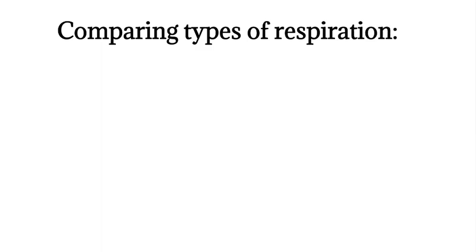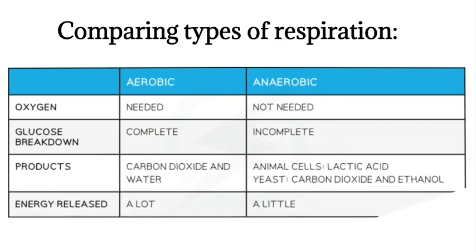Let's compare the two types of respiration. For aerobic respiration, oxygen is needed; for anaerobic, it is not needed. Glucose breakdown is complete in aerobic and incomplete in anaerobic. The products of aerobic respiration are carbon dioxide and water, while anaerobic produces lactic acid, carbon dioxide, and ethanol. The energy released in aerobic is a lot, whereas in anaerobic it is little.